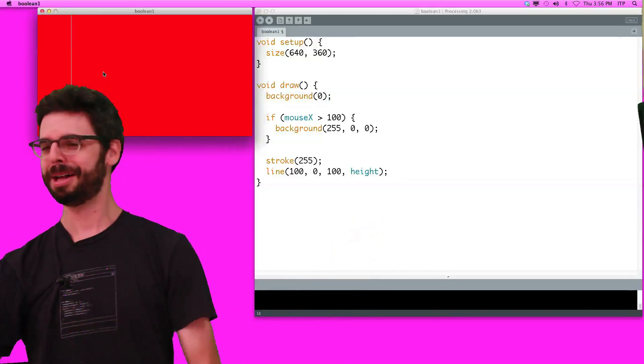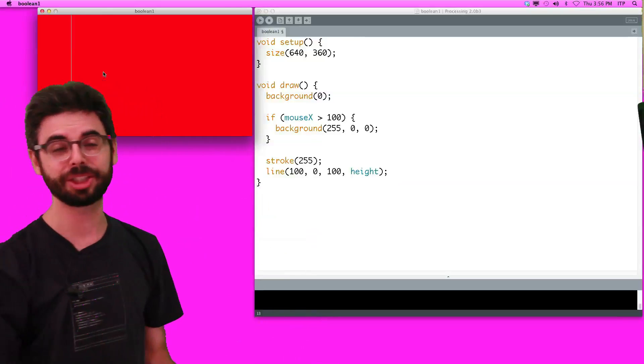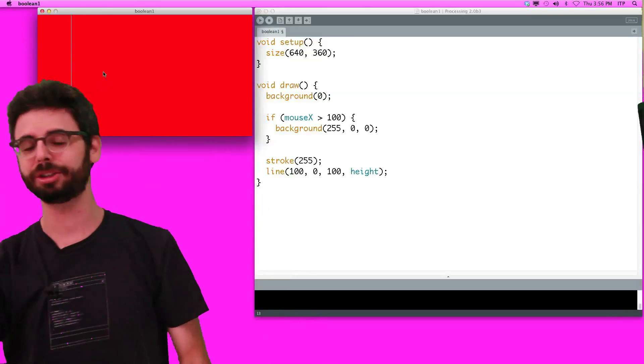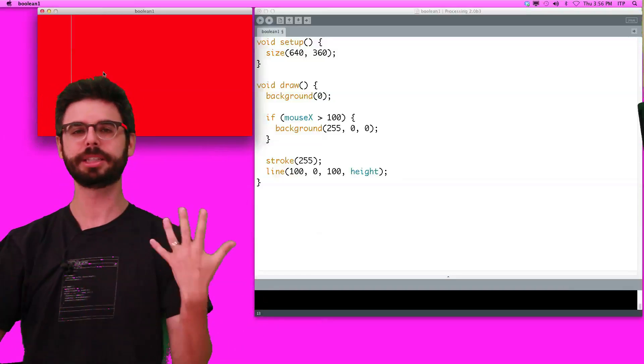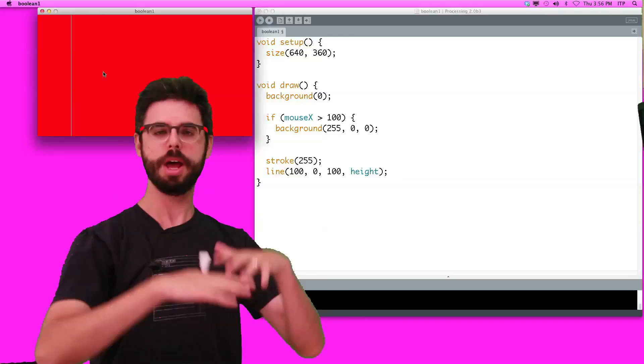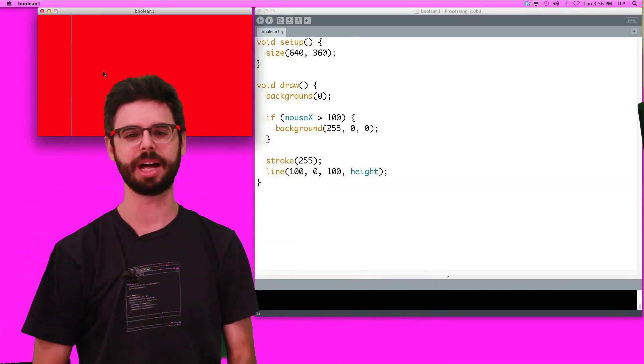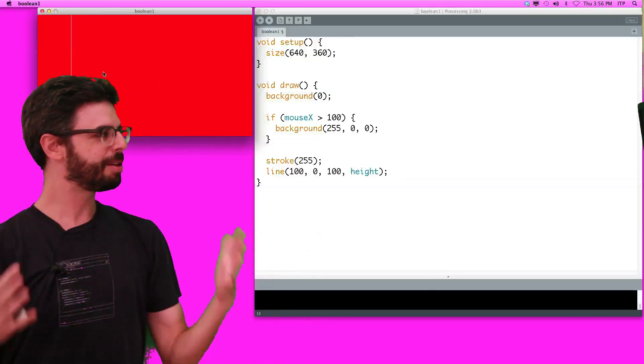Our program is doing something different each time through draw based on a condition. This is how everything works. You're programming Pong. If the ball hits the paddle, then change the ball's direction. If the ball goes past the paddle, change the score, etc. This is what we're doing. We just want to be able to set conditions and execute different code based on those conditions. Everything you do is going to be thinking through and designing that logic.